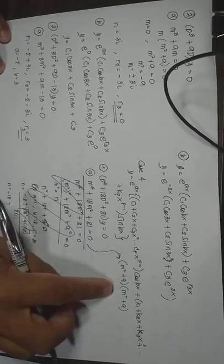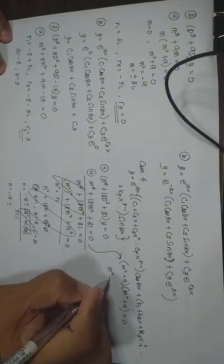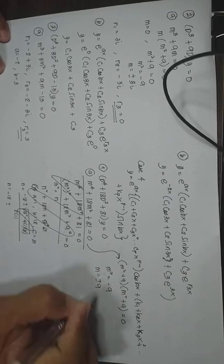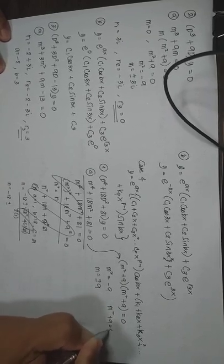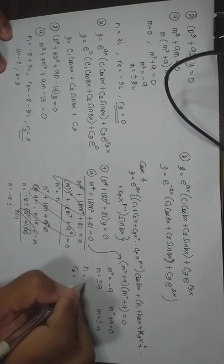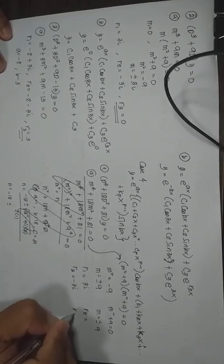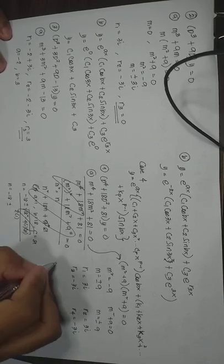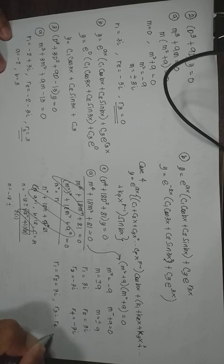We can factor this out as M squared plus 9 times M squared plus 9 equal to 0, wherein M squared equal to negative 9, so M equal to plus and minus 3i for both factors. So we have R sub 1 and R sub 3 equal to 3i and negative 3i, and R sub 2 and R sub 4 equal to 3i and negative 3i.